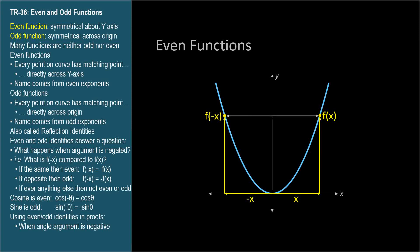For even functions, f of negative x equals f of x. The value on one side of the y-axis is always the same as the value on the other side for even functions, mirror image.